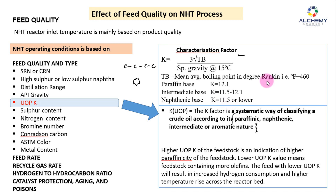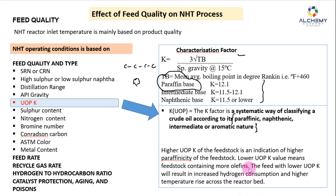What does the UOPK value indicate? A higher UOPK of the feedstock indicates higher paraffinic content — higher K value means more paraffinic, which is desirable. A lower K value means the feedstock contains more olefinic or naphthenic content. Feed with lower UOPK will result in increased hydrogen consumption and higher temperature rise across the reactor.